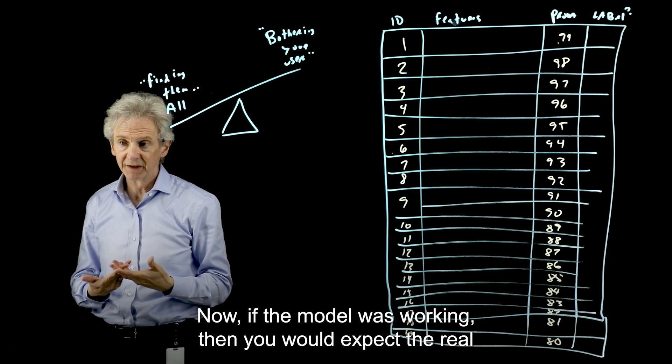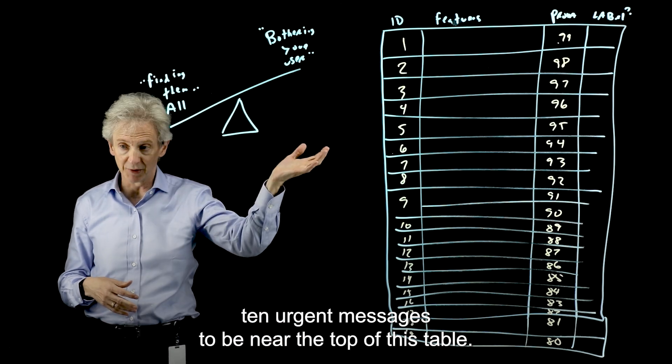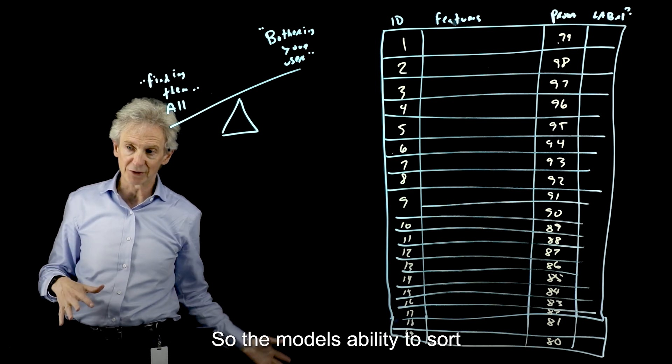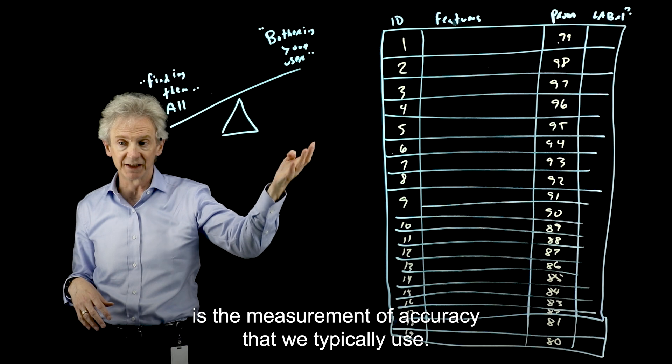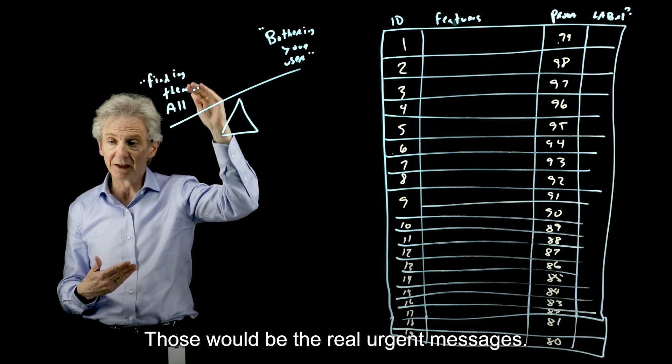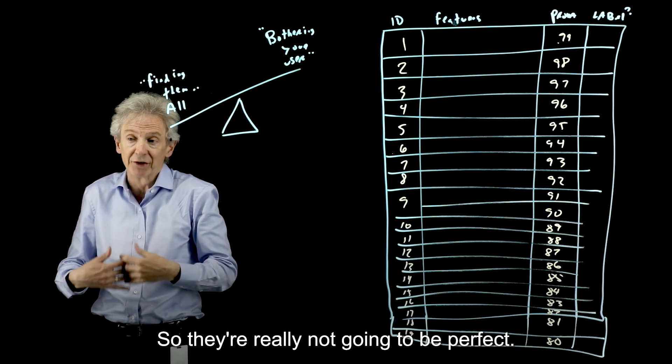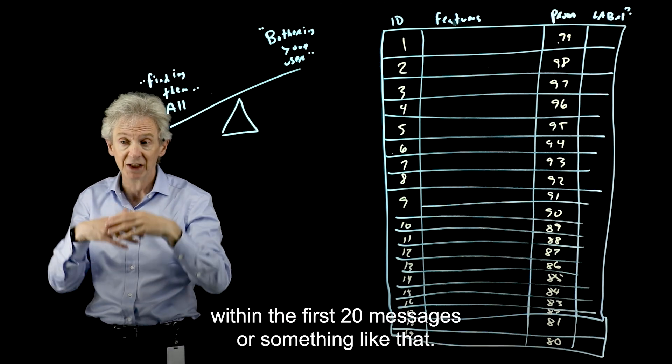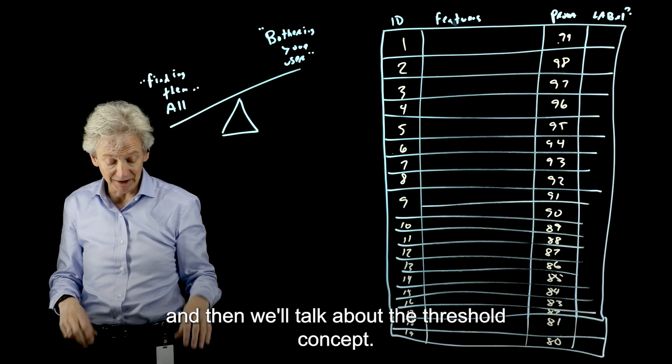Now, if the model was working, then you would expect the real 10 urgent messages to be near the top of this table, to have the highest probability. So the model's ability to sort the positive class, basically the urgent messages to the top, is the measurement of accuracy that we typically use. If the model was perfect, it would be the very first 10. Those would be the real urgent messages. But we're dealing with imperfect models. So they might be 95% accurate, so they're really not going to be perfect. Those 10 urgent messages might be within the first 20 messages or something like that. So let me take a moment, and I'll fill in an example for you. And then we'll talk about the threshold concept.